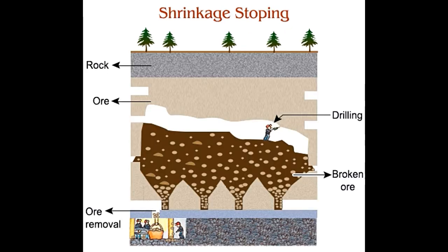Shrinkage stoping. Similar to sub-level stoping, this technique is carried out in vertical ore deposits. However, in this case, the blasted ore is allowed to deposit at the bottom of the stope, and this forms a working surface for excavation at higher levels and also supports the stope walls. This method derives its name from the fact that the muck — fragmented ore — at the bottom tends to occupy a large volume, so it is shrunken by removing some ore at regular intervals. The ore is allowed to accumulate until there is no space between the muck and the roof, when it is finally collected.